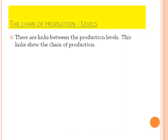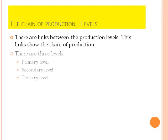The chain of production consists of levels that are linked with each other — that is why we call it a chain of production. There are three levels: primary level, secondary level and tertiary level.